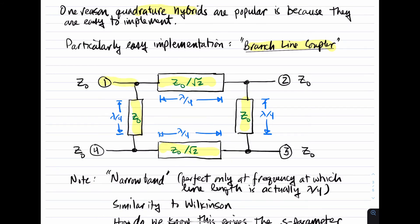In a branch line coupler, we have four sections of transmission line arranged like so in a ring, and ports one, two, three, and four are attached to nodes between these transmission lines. Each transmission line is lambda by four, that is one-quarter wavelength. And the characteristic impedances of these transmission lines have a very specific value, namely Z-naught on these vertical sections and Z-naught divided by the square root of two on these horizontal sections.